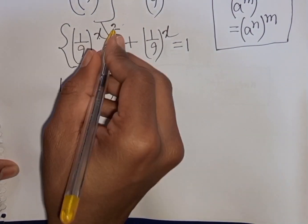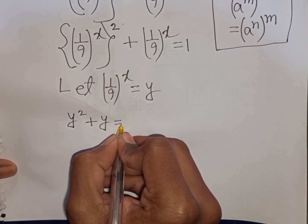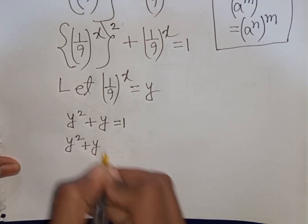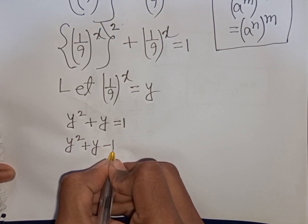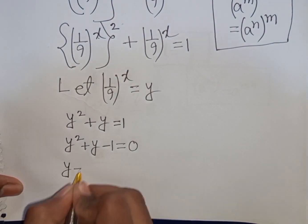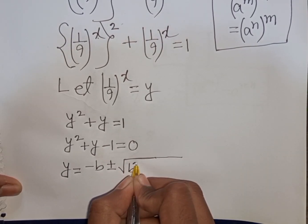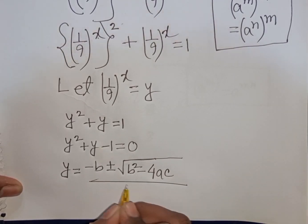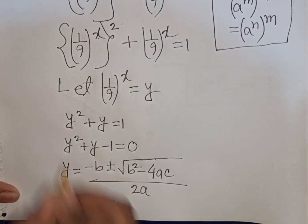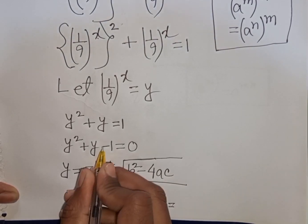So our equation will be y squared plus y equals 1. We bring 1 to the left side so it becomes minus 1, giving y squared plus y minus 1 equals 0. Here a equals 1, b equals 1, and c equals negative 1.